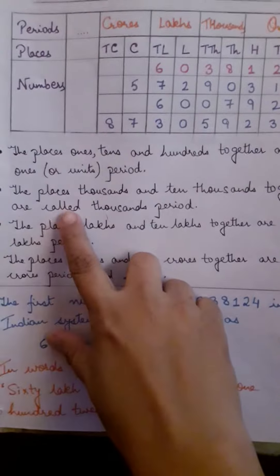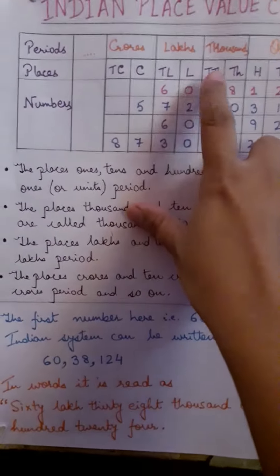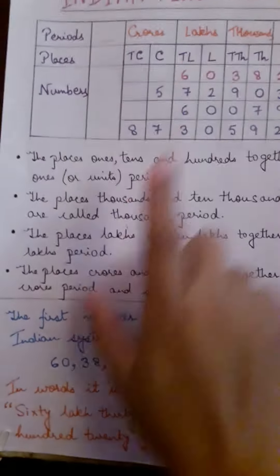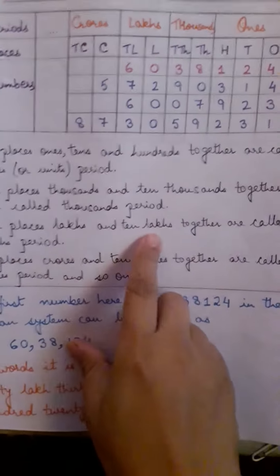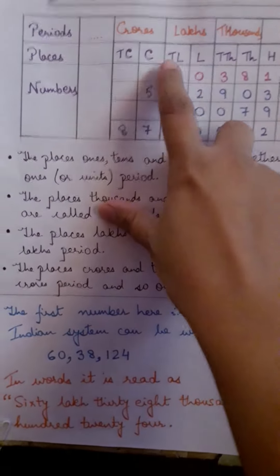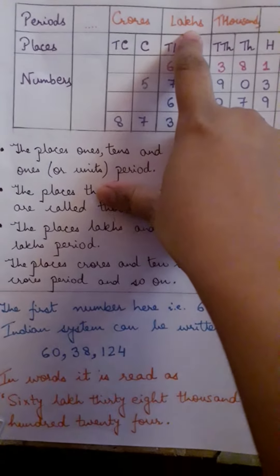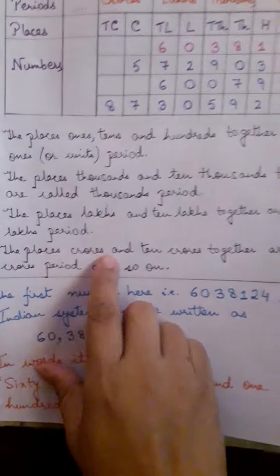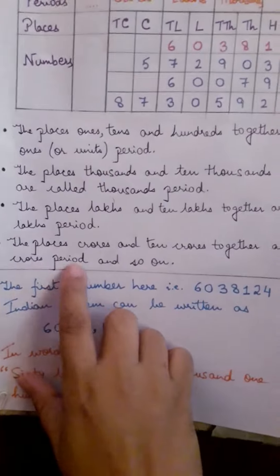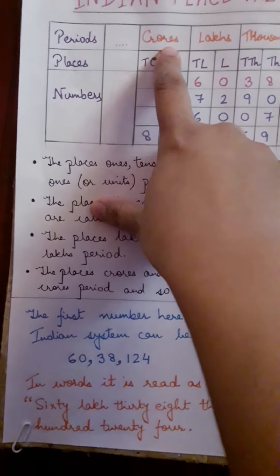The places thousands and ten thousands together are called the thousands period. The places lakhs and ten lakhs together are called the lakhs period. The places crores and ten crores together are called the crores period, and so on.